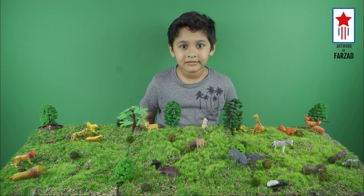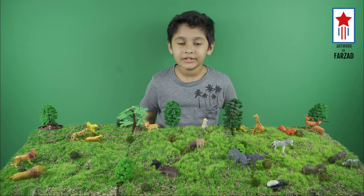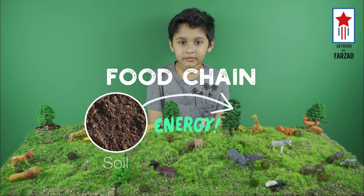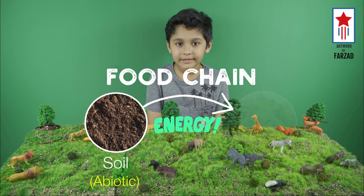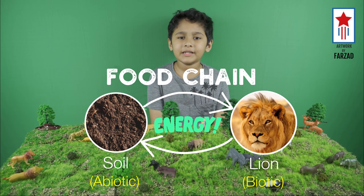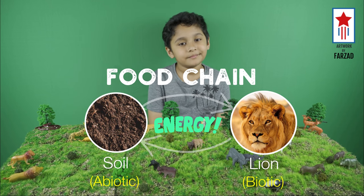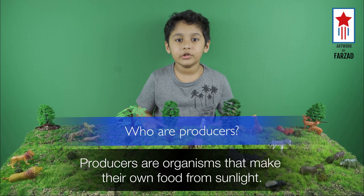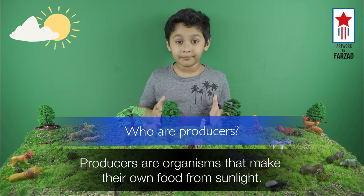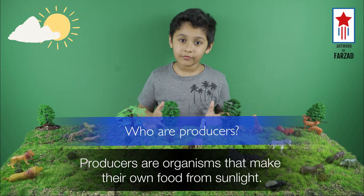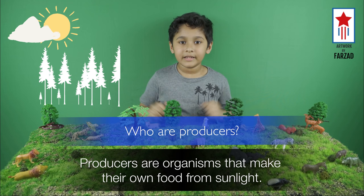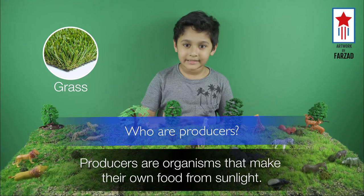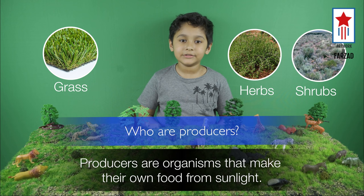Let's explain the ecosystem using the food chain. I will try to show how the energy flows from different organisms using the trophic level or food chain. Let's start with the producers. Producers are organisms that make their own food from sunlight. In grassland, the producers are mainly grass and different types of herbs and shrubs.